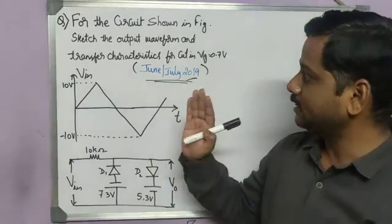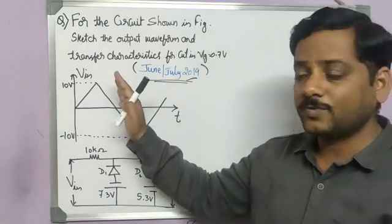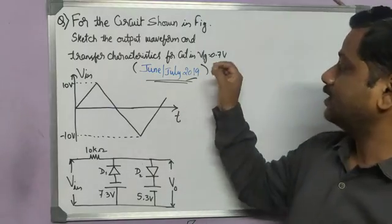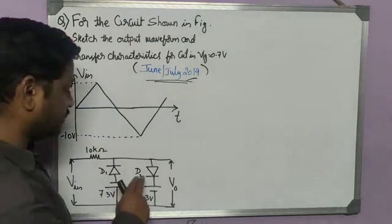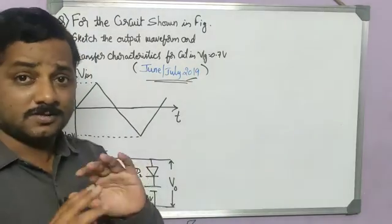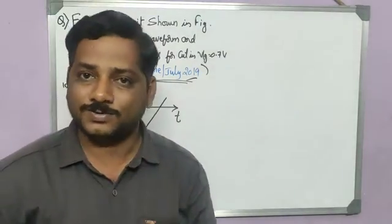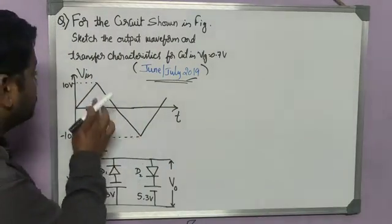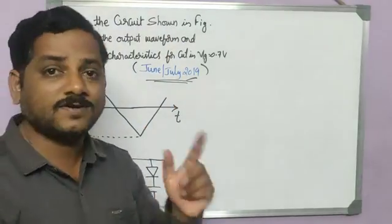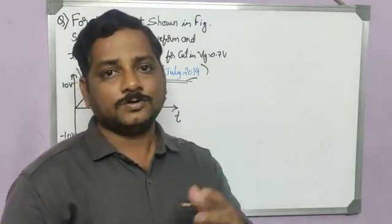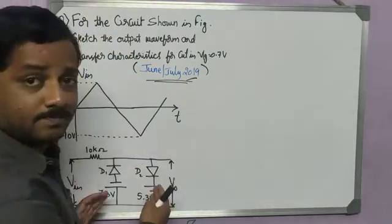The question says that there is a circuit shown in the figure for which you need to sketch the output waveform and also provide the transfer characteristics for a cutting voltage of 0.7 volt. These two diodes have a cutting voltage of 0.7 — in other words, these two diodes are silicon diodes. The input magnitude is 10 volt. For this circuit, what would be the output? You need to plot the output as well as the transfer characteristics. Let me solve it step by step — I will give you the simplest method of solving these kinds of questions.